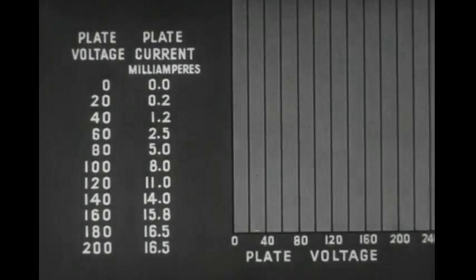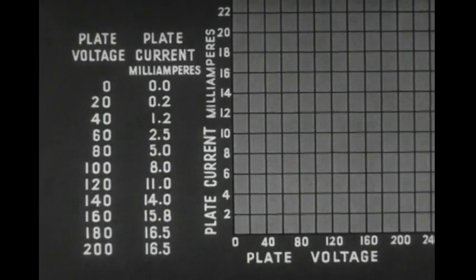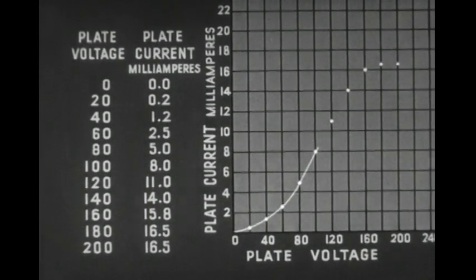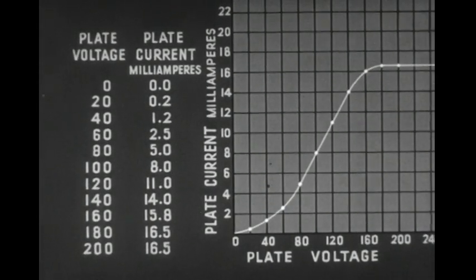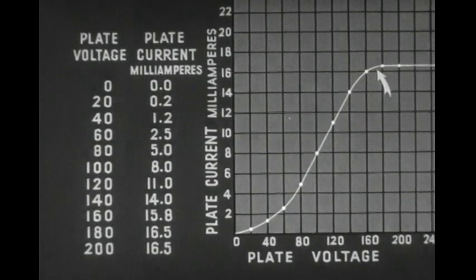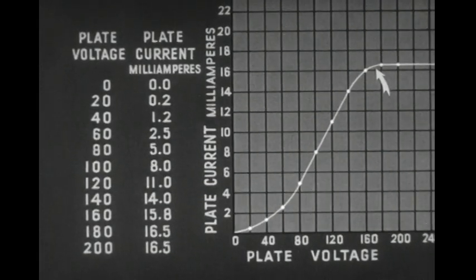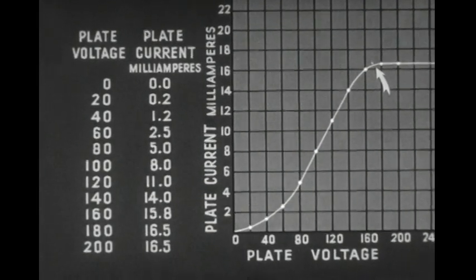If the voltage on the plate is increased, the plate current will increase, since more electrons will be attracted because of the higher positive charge. Using ordinates representing voltage and current, we can trace a curve to show this relationship. Note the saturation point, beyond which there is no increase in plate current even when the voltage is increased.